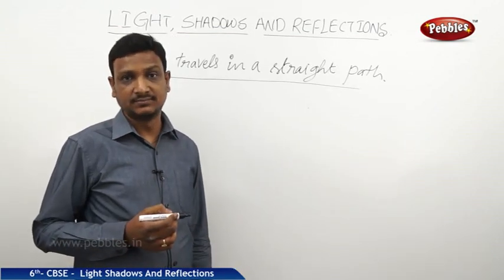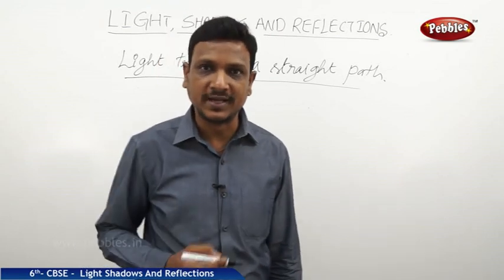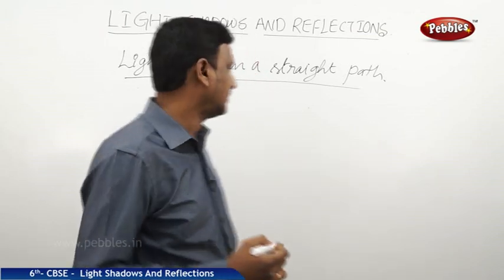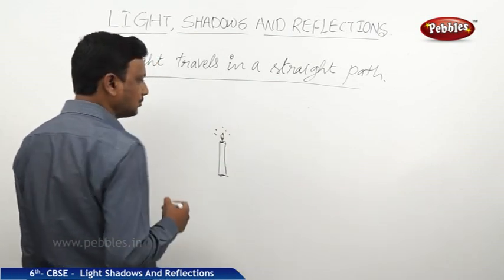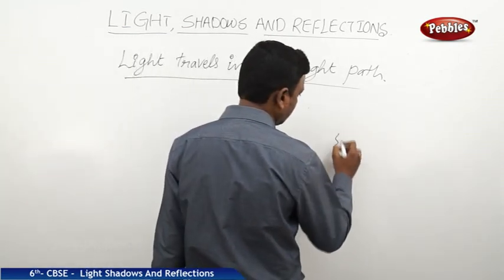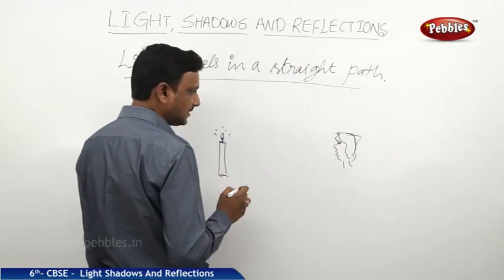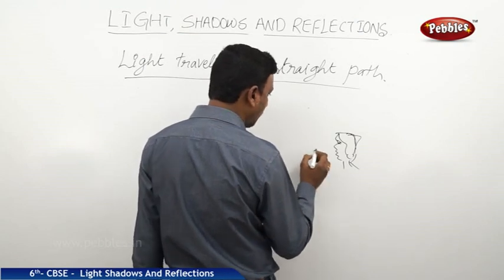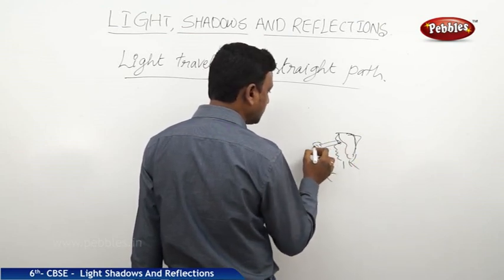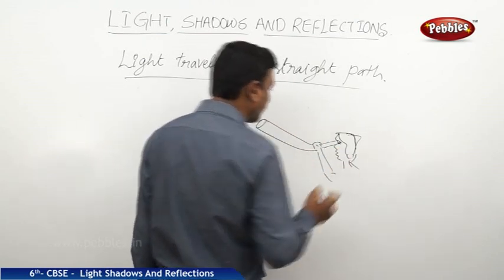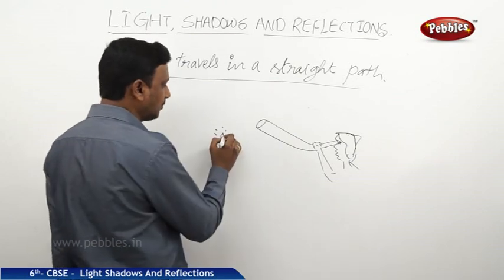Now let us see what is the path of light and how light travels. Light travels in a straight line — this is a fact. How can we prove it? There is a source of light, a candle. A boy is aiming to see the light. He took a bent pipe — one that is not straight. Is he able to see the light of the candle through a bent pipe?